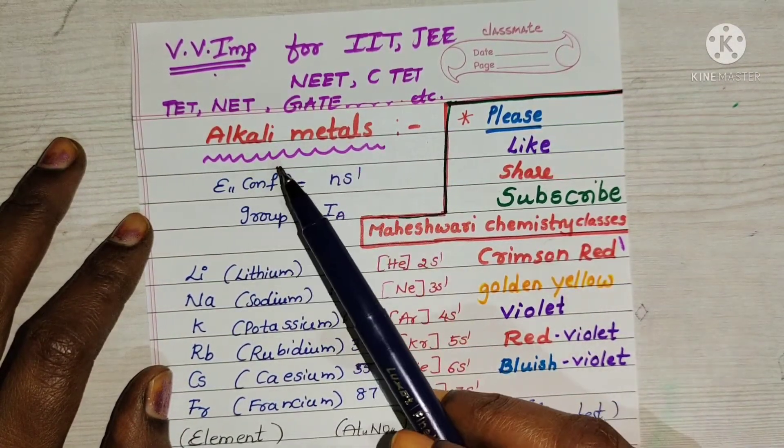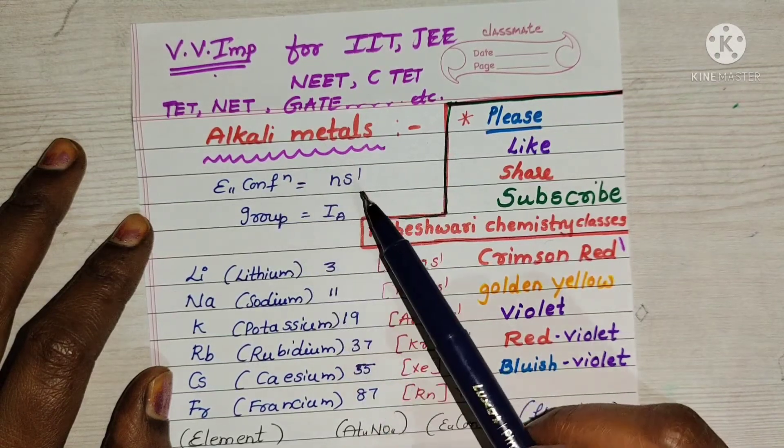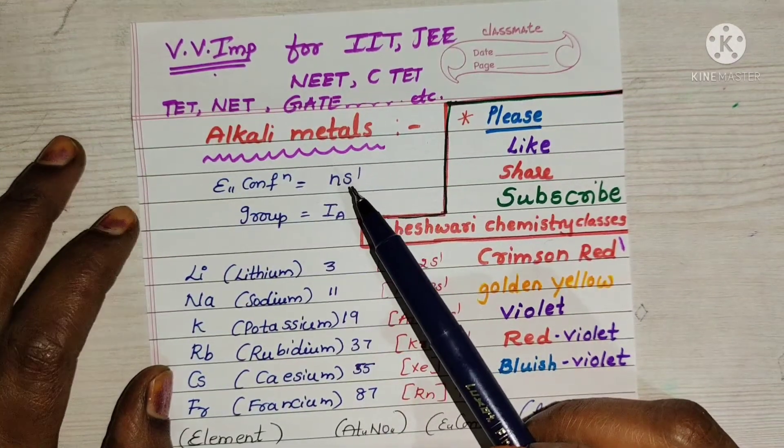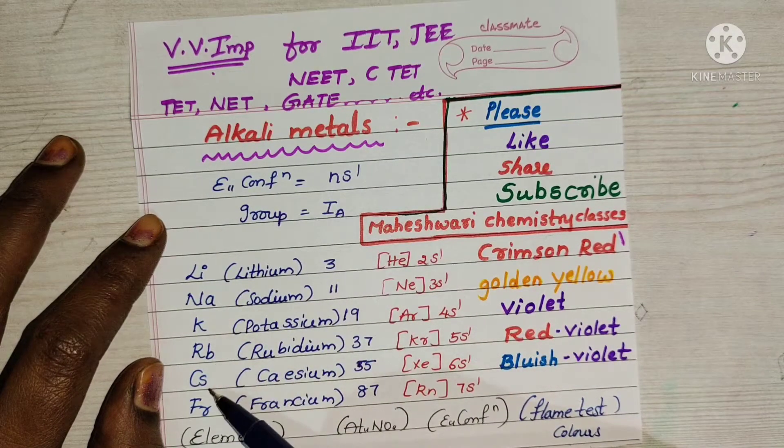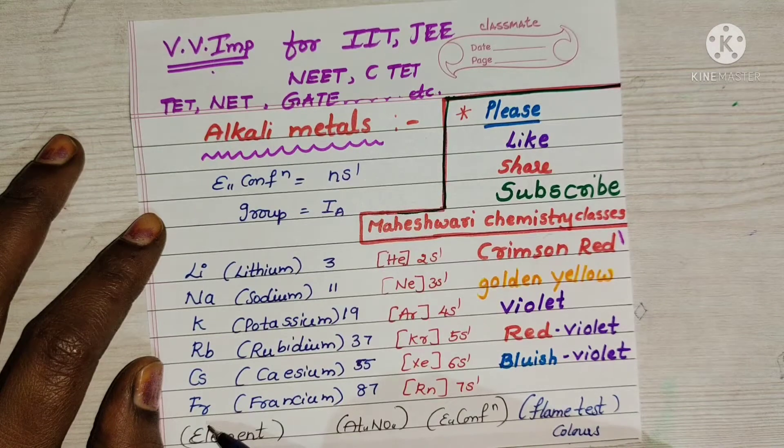In the periodic table, the first group elements are the alkali metals. They are lithium, sodium, potassium, rubidium, cesium, and francium.